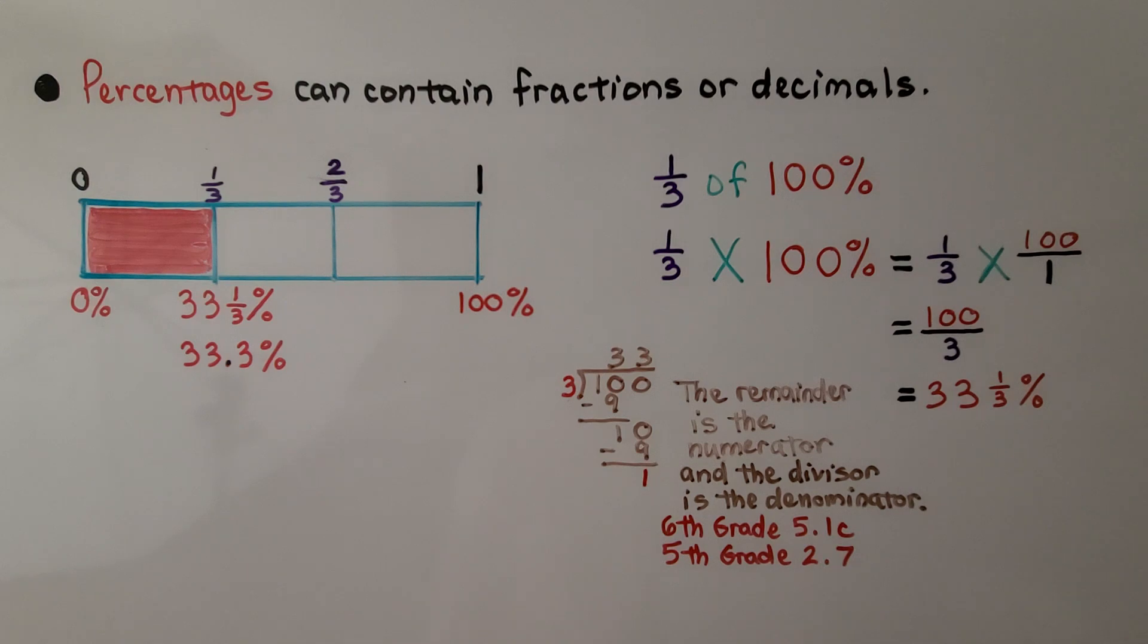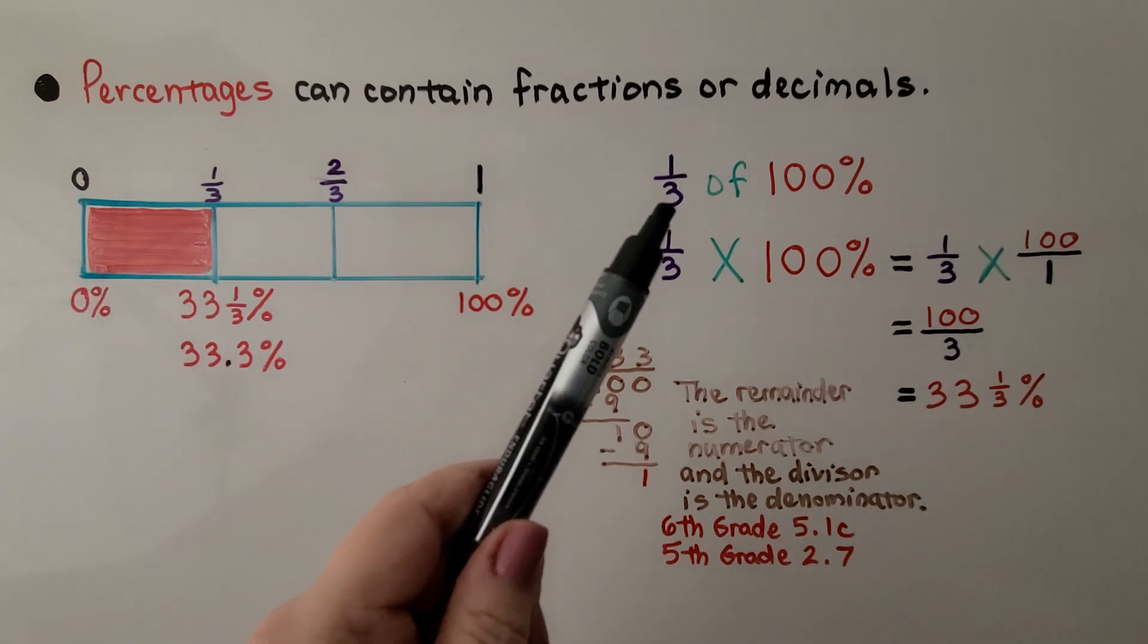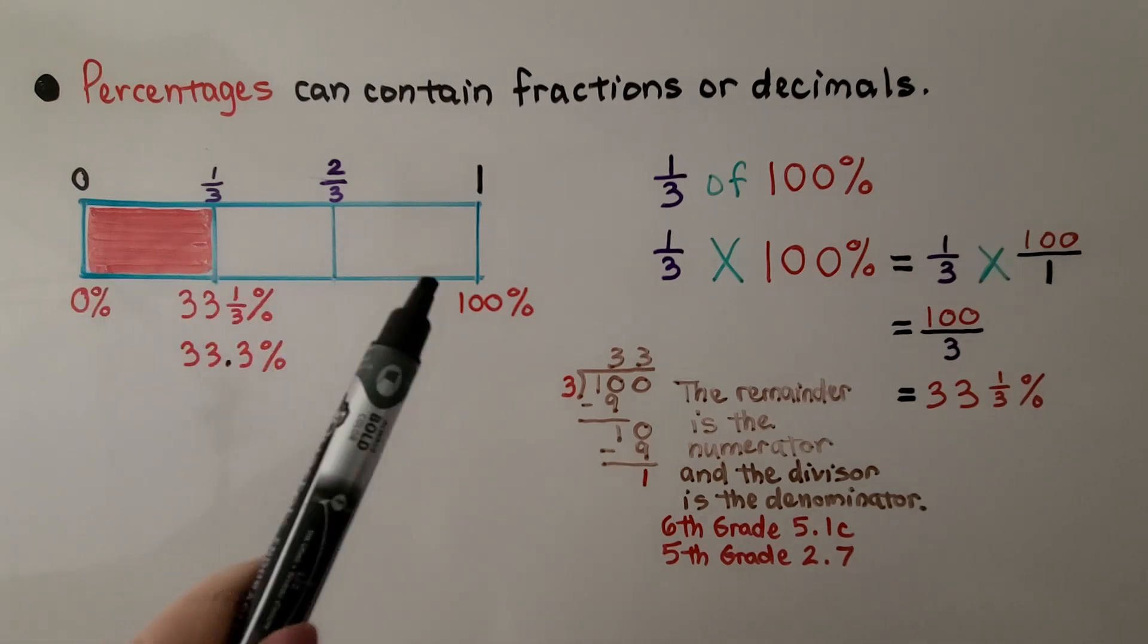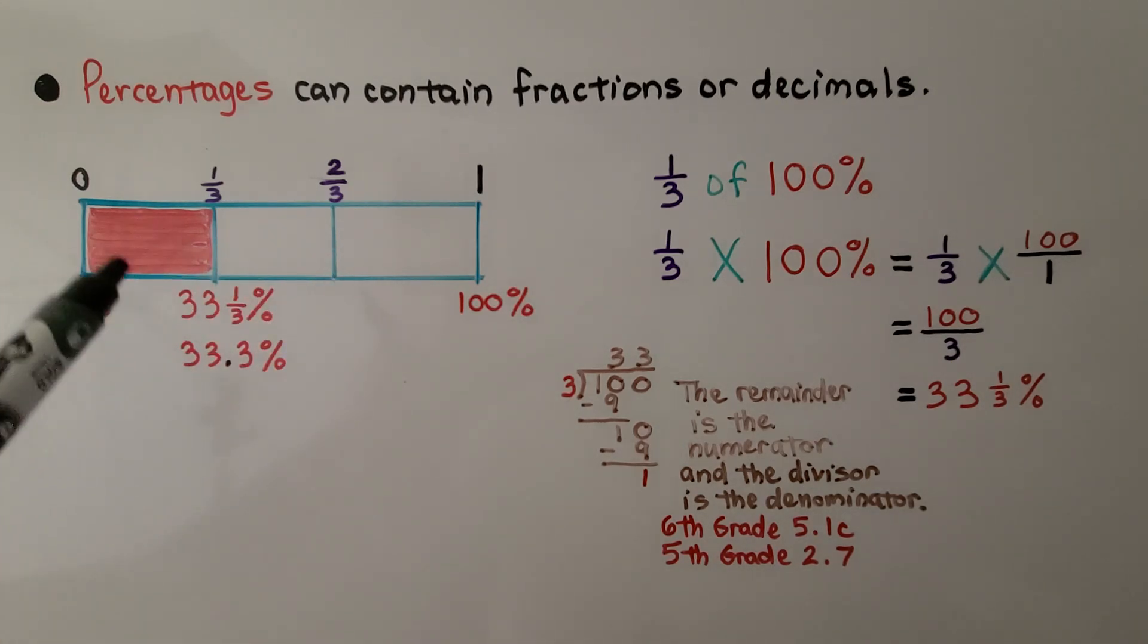And percentages can contain fractions or decimals. Here we have a percent bar graph, and we need to find one-third of 100%. We split the bar graph into three equal parts, and we shade one-third of it.